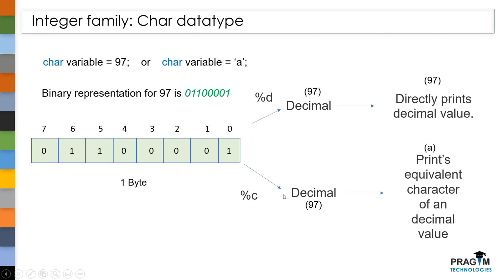For example, here we got 97 as a decimal value. The equivalent character of 97 is small 'a'. That's the reason when we use %c we got small 'a' as an output. I hope you are clear about this concept.